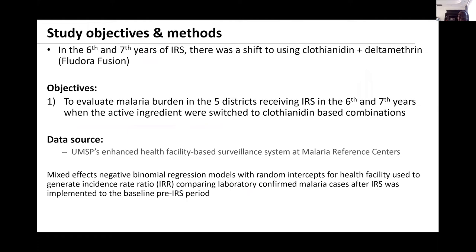Then in all districts, we had Fludora Fusion in the sixth and seventh year. We used the UMSP data that Jane Francis described, and we used mixed effects negative binomial regression models with random intercepts on that data to do the analysis.